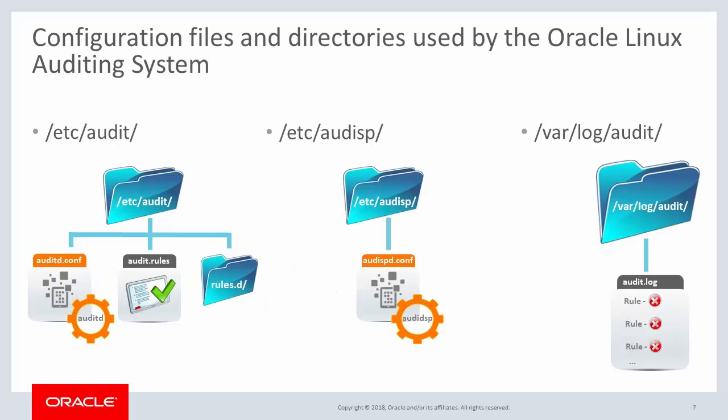Here are the files and directories typically used by the Oracle Linux auditing system. In the /etc/audit directory, you find the auditd.conf file, which provides the configuration information for the audit daemon. Also in this directory is the audit.rules file, where you can define the audit rules to be used to monitor for violations. There is also the rules.d directory, which will contain any additional rules files you want the system to use during auditing. In the /etc/audisp directory is the audispd.conf file, which provides configuration information to the audit dispatcher daemon. And there is the /var/log/audit directory, which contains the audit.log file, where information on all audit rule violations are stored.